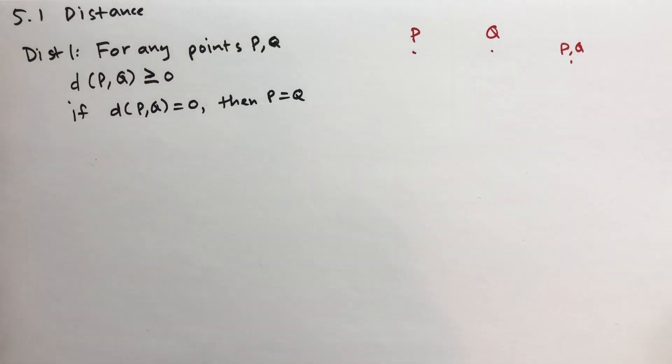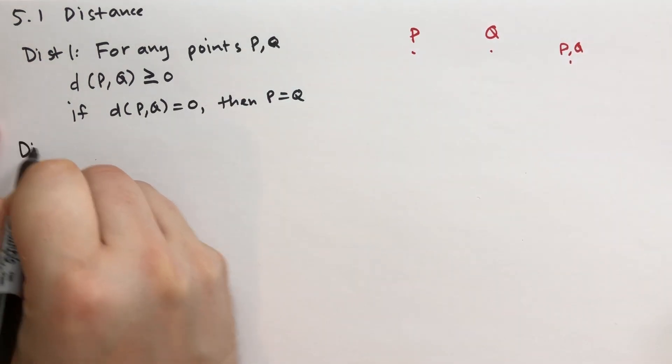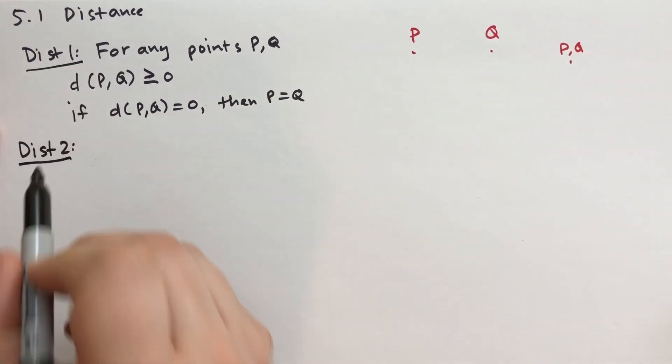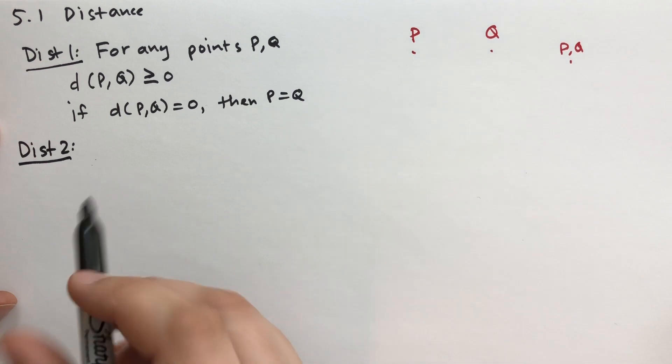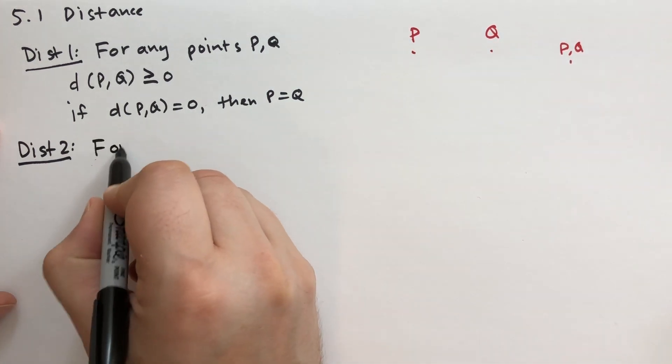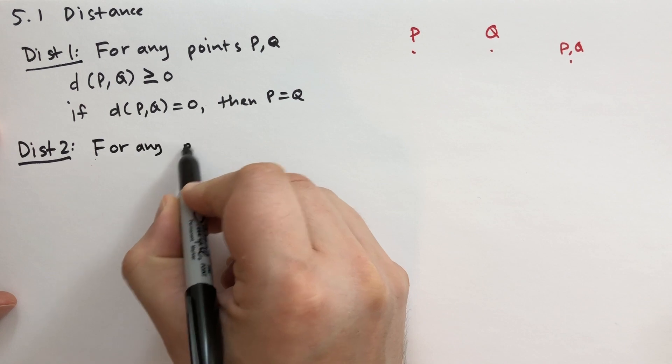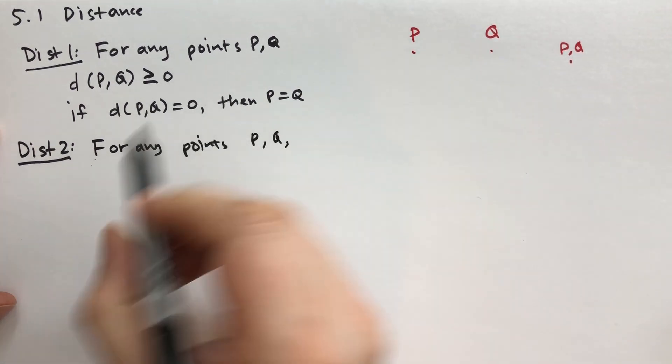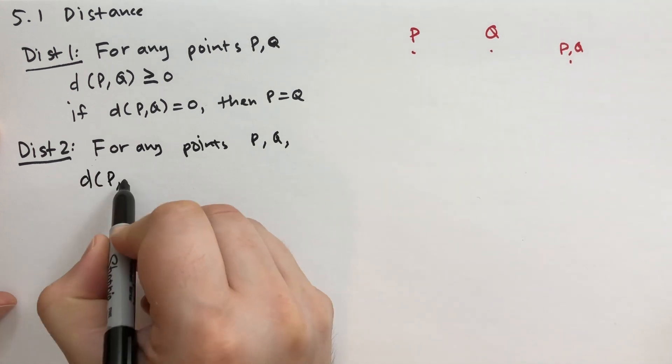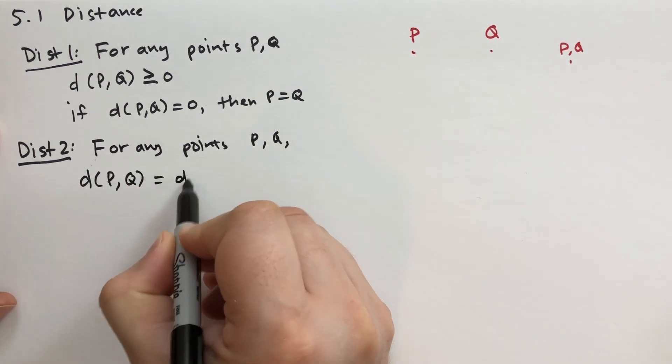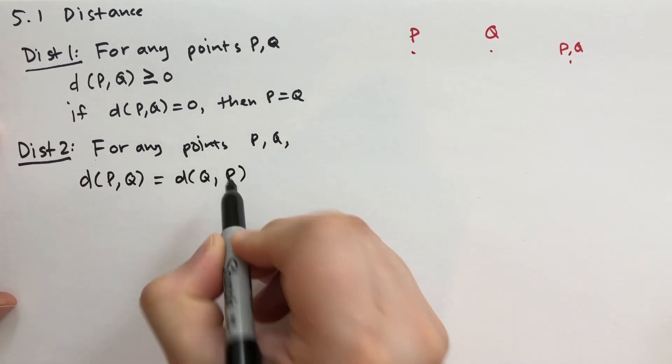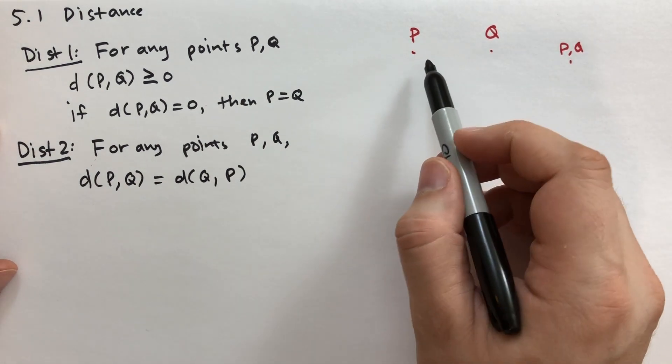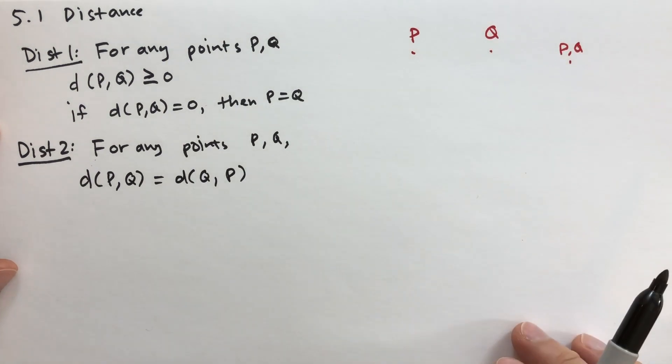Fundamental, useful, we're going to be using it in proofs and stuff, but it's very basic, very simple. The second assumption we're going to make is called Dist 2. This one says that for any points P and Q, the distance from P to Q is the same as the distance from Q to P. This should be relatively obvious. It doesn't matter which direction you're traveling on the plane, it takes the same amount of time or distance to get to where you want to go.